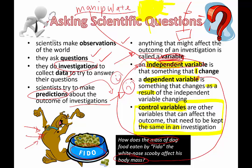What are some controlled variables? Anything else that would affect Fido's body mass: exercise, amount of sleep, water that's drunk, and other types of snacks that are not the food given in the bowl. Those are all things you need to keep the same.